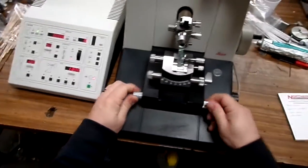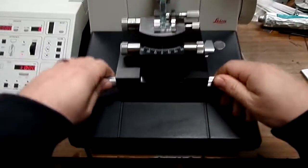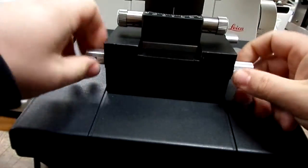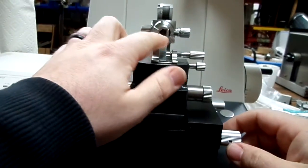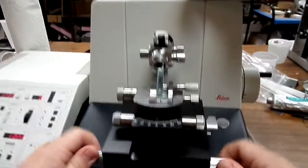So first of all, the base of the entire thing moves using these two pegs down here. Just rotate it and you can see the blade move next to it. You can see it move the entire thing side to side.